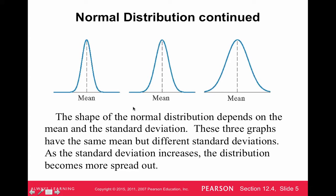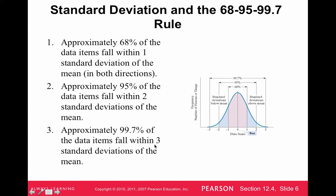The normal distribution depends on the mean and the standard deviation. The mean is always in the middle, and the standard deviation, which we went over in section 12.3, measures spread. The larger the standard deviation is, the more spread out or wider the bell curve is. The one on the left has the smallest standard deviation, while the one on the right has the largest and is more spread out. One of the big things we're going to ask about the bell curve is to use the 68, 95, 99.7 rule.